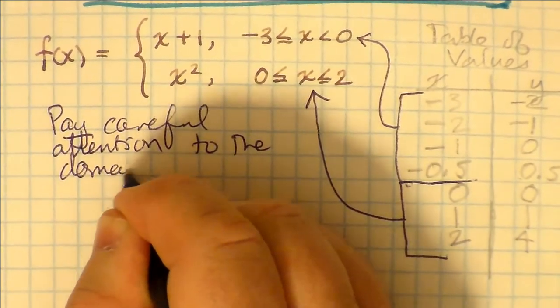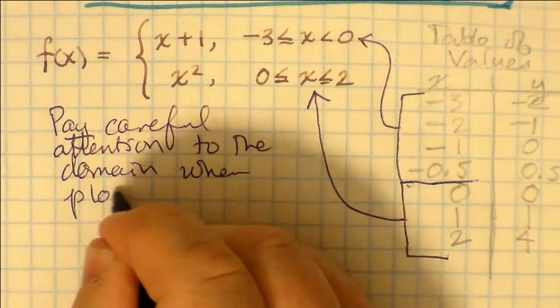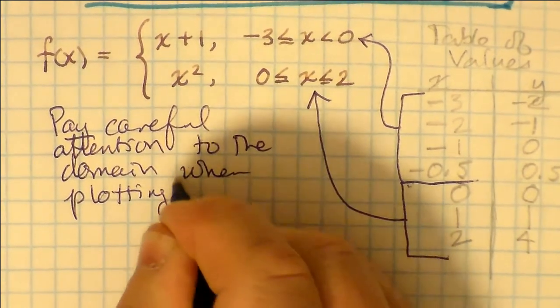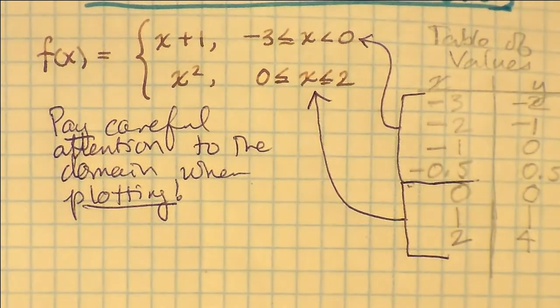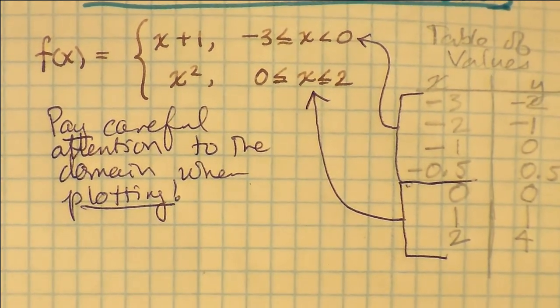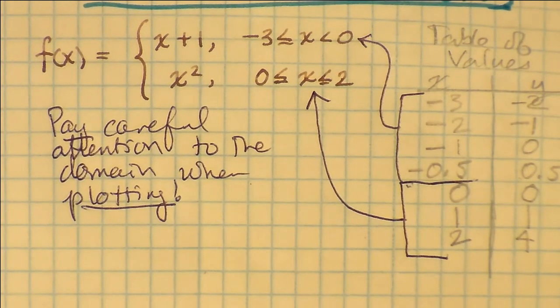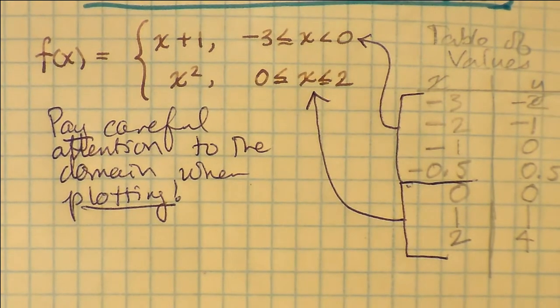So whenever you plot points on a graph and make up your table of values, you always have to pay careful attention to the domain, especially when plotting and especially when doing your table of values. Otherwise, you're going to end up with points that are not the correct ones.